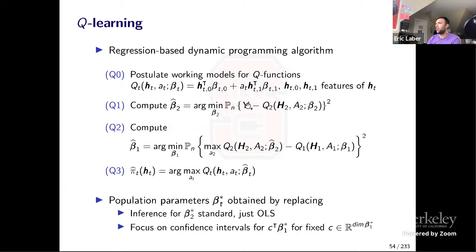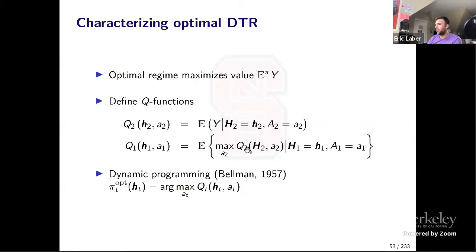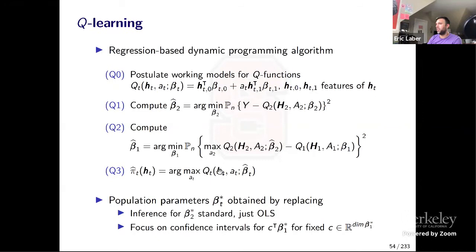To estimate the Q functions we use least squares. Beta-hat-2 is the least squares estimator minimizing P_N(Y - Q2(H2, A2; beta2))^2. For the first stage, we plug in the maximized estimated second-stage Q function: max over a2 of Q2(H2, a2; beta-hat-2). That becomes the response, and we regress it on the linear model for the first stage to get beta-hat-1. Then PI-hat-T(H_T) is the argmax of Q_T(H_T, A_T; beta-hat-T). It's really just two regressions and a maximization — very easy to implement.